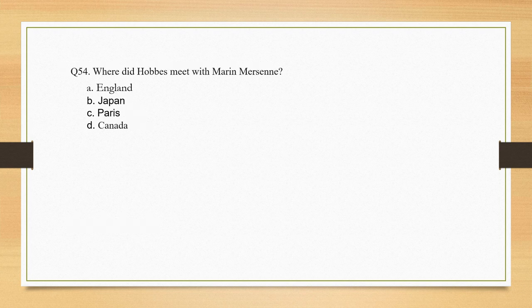Where did Hobbes meet Marin Mersenne? Options: England, Japan, Paris, Canada. The correct option is option C: Paris.